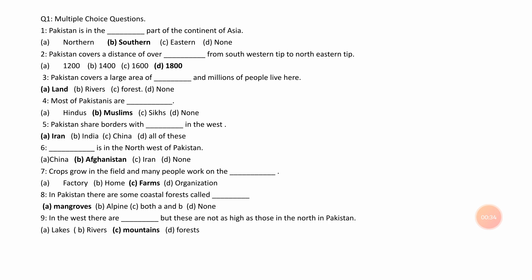Number 3. Pakistan covers a large area of ___ and millions of people live here. A. Land, B. River, C. Forest, D. None. Answer is A. Land.